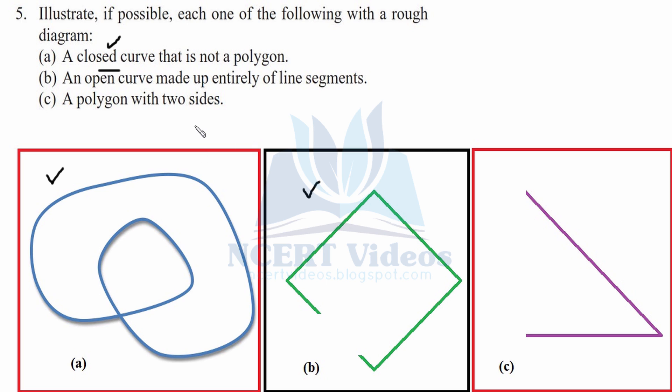C, a polygon with two sides. Here we have two sides but it is not a polygon. Why? Because it is not closed. A polygon needs to be closed. It is not possible to make a polygon with two sides. At least we must have three sides. This was your last question, question number 5.